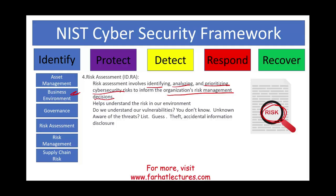A threat is different from a vulnerability. A threat is something you can anticipate — for example, theft or fire. But the vulnerability is how that threat reaches your asset, and that's often unknown. Threats are a bit easier to foresee, but you may not know which vulnerabilities are allowing the threat to reach your assets. You could also have accidental information disclosure. Do you participate in an information sharing and analysis center? Do you receive third-party or public information about new cybersecurity threats? That is part of your risk assessment.